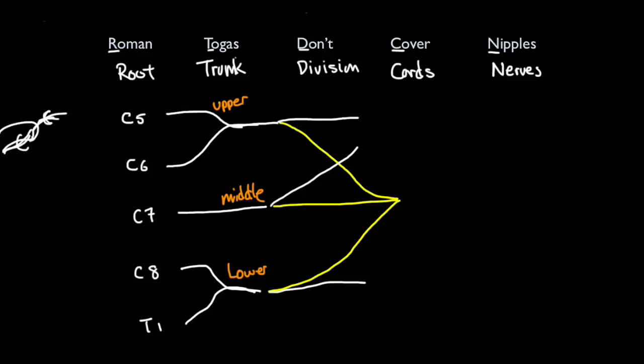Then, you've got the cords, where these two fuse together to form one cord, and you've got the three posteriors that fuse together to form a second cord, and then you've also got this one over here, marching on, forming its own cord. And so what are these three cords called? You've got a lateral cord, you've got a posterior cord, because the posterior divisions all form the posterior cord, and you've also got a medial cord.